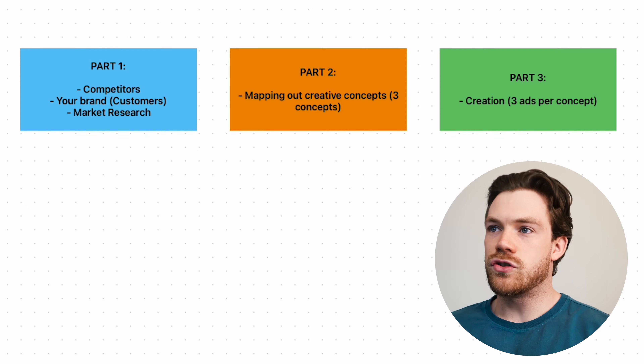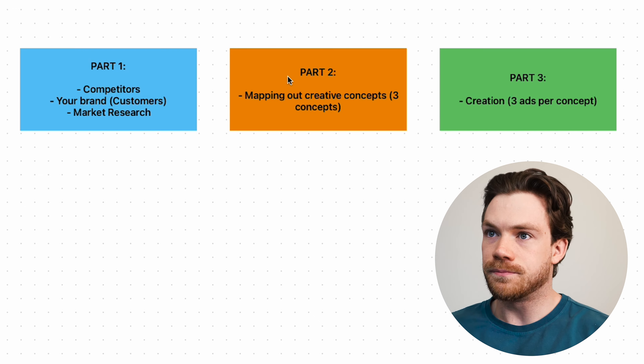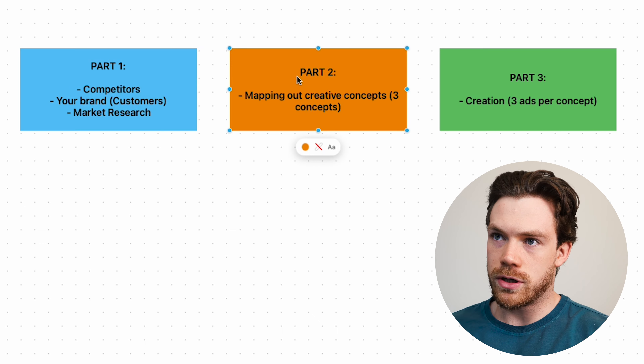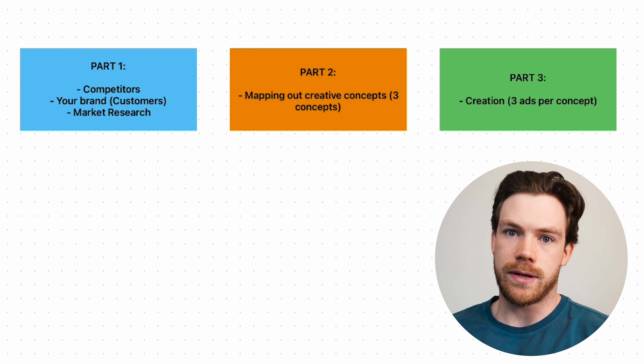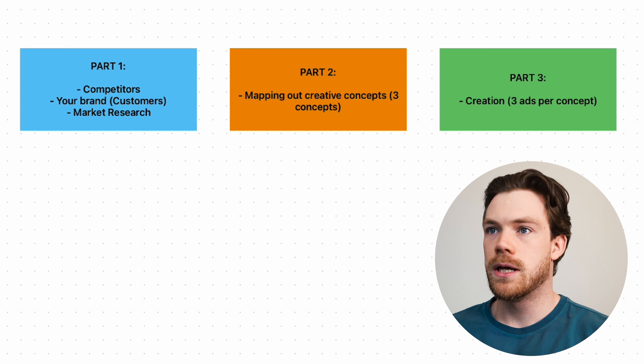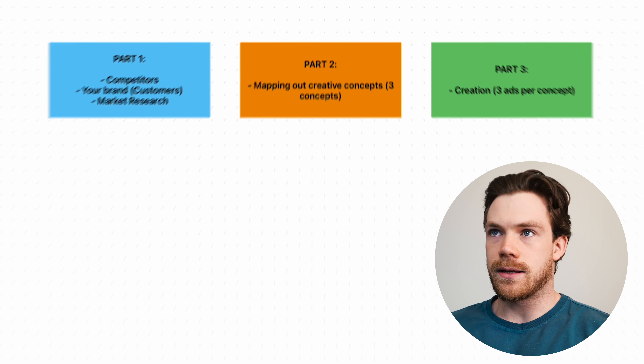Above all of this, you need to have a very, very good — a superior — product. If you don't, this is going to be a very short-term strategy that isn't ultimately going to work very well. So let's assume you've got a great product. You've mapped out your creative concepts — three of them — and then get them created, three ads per concept. Now we need to look at testing.